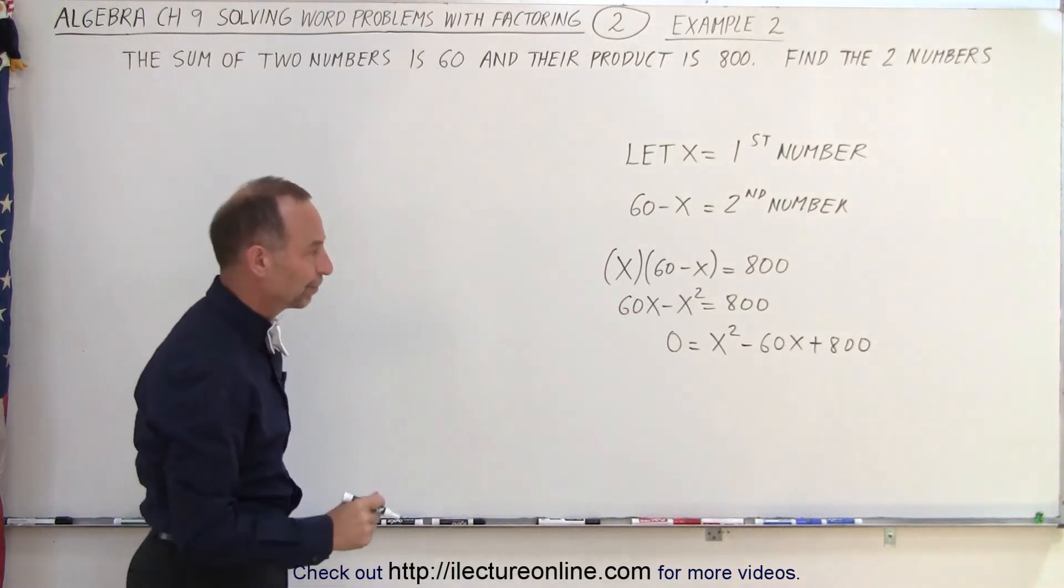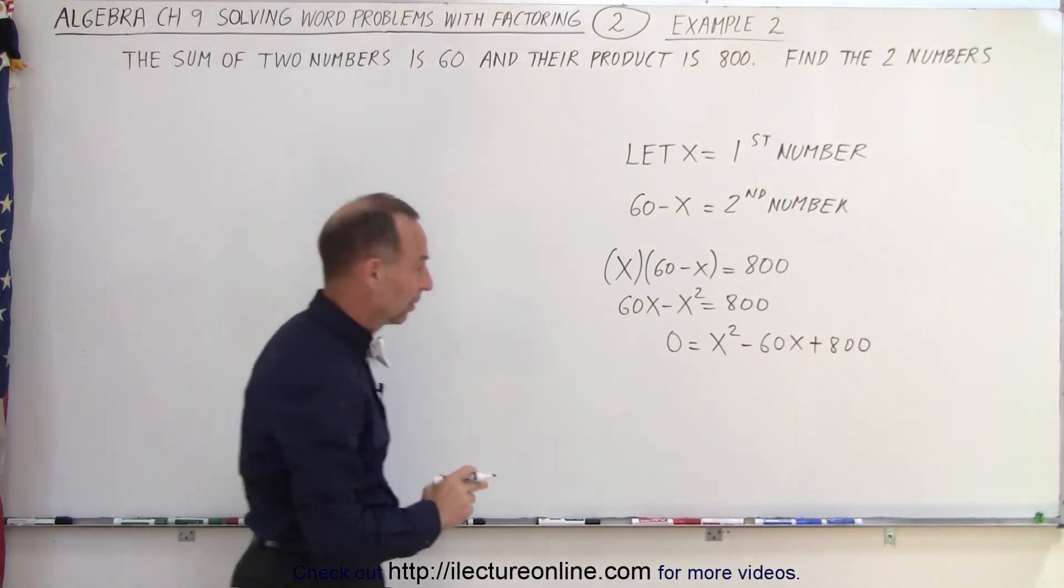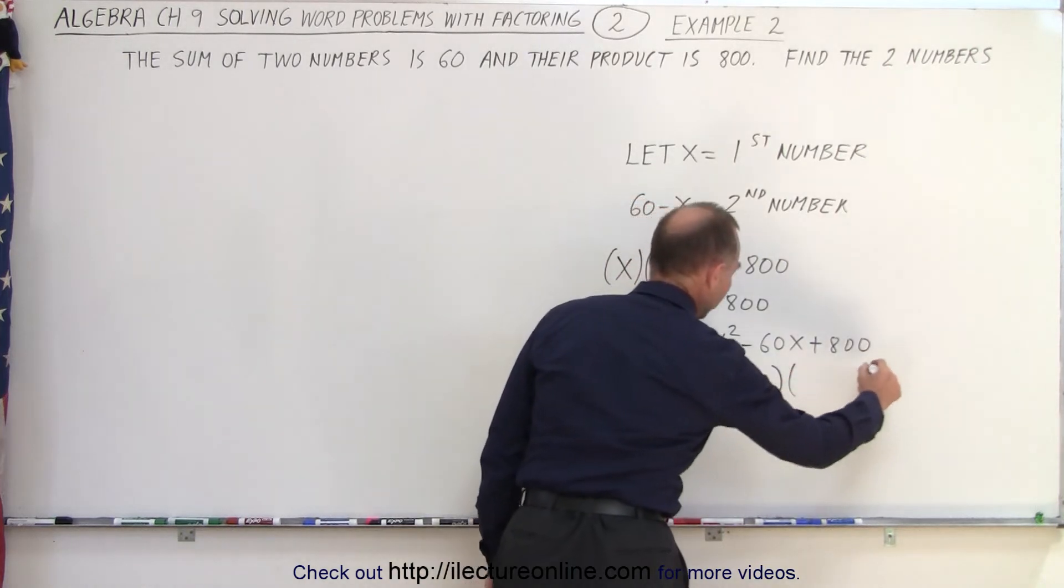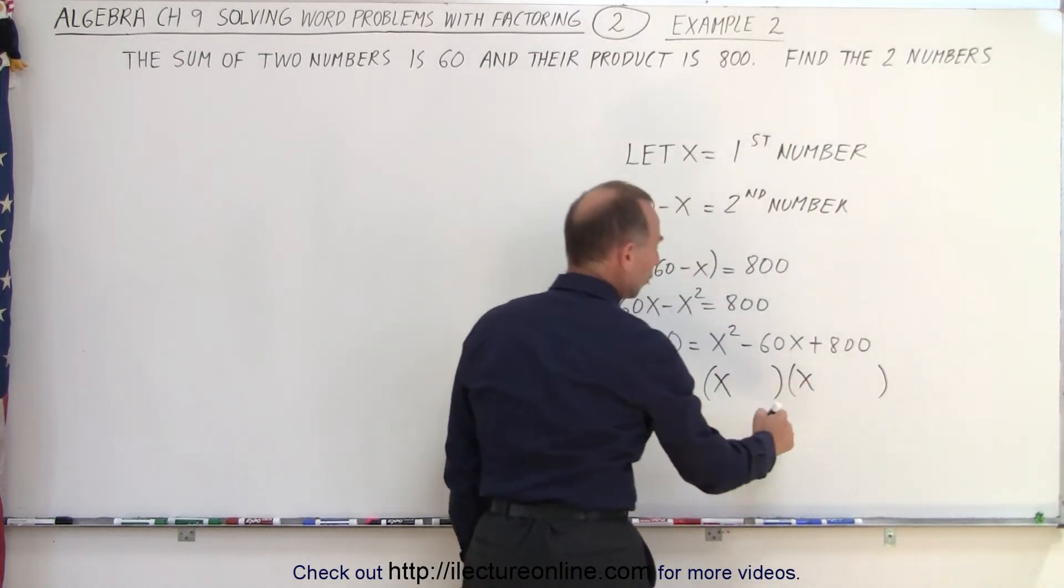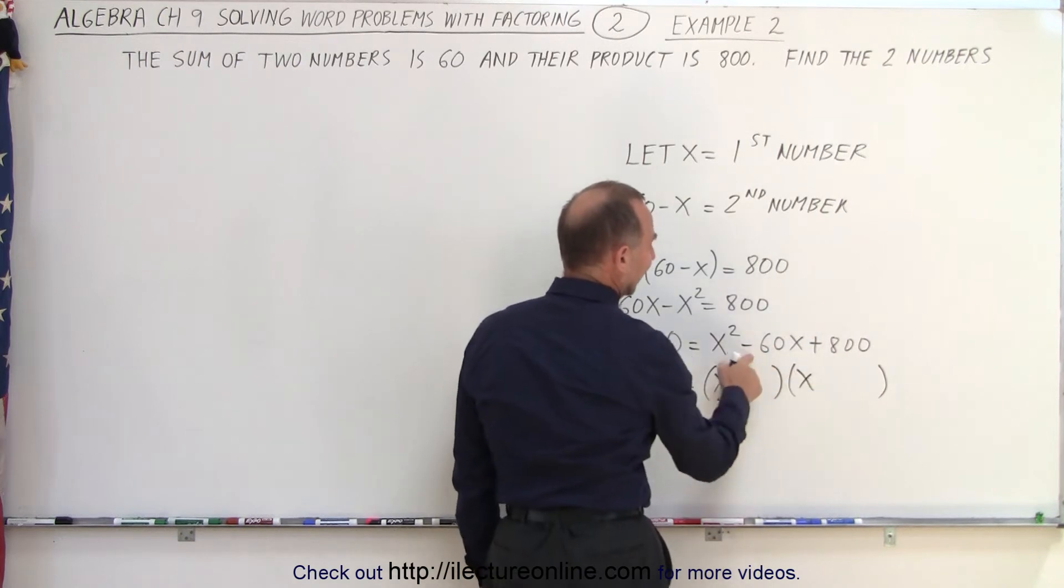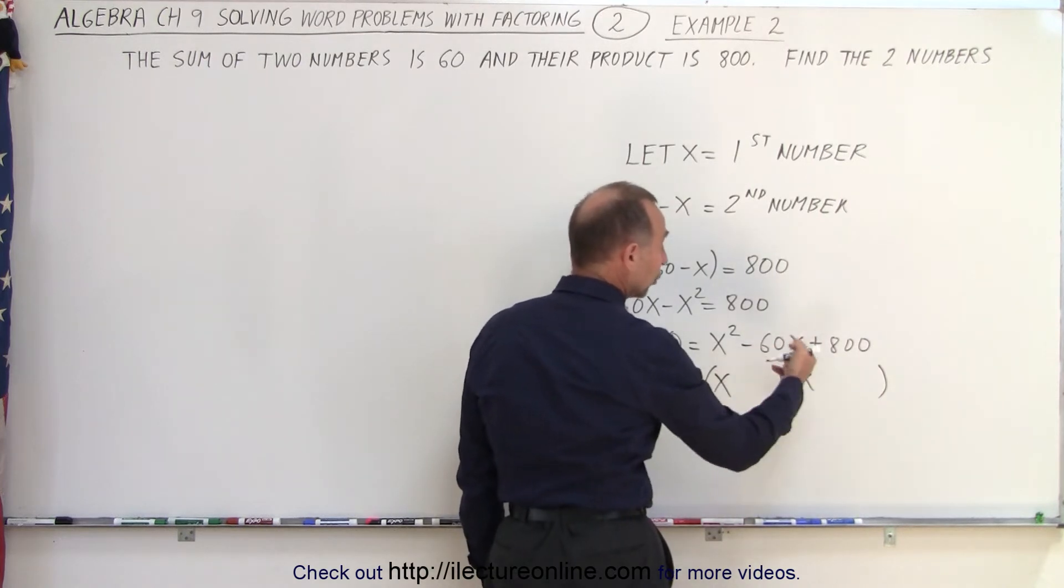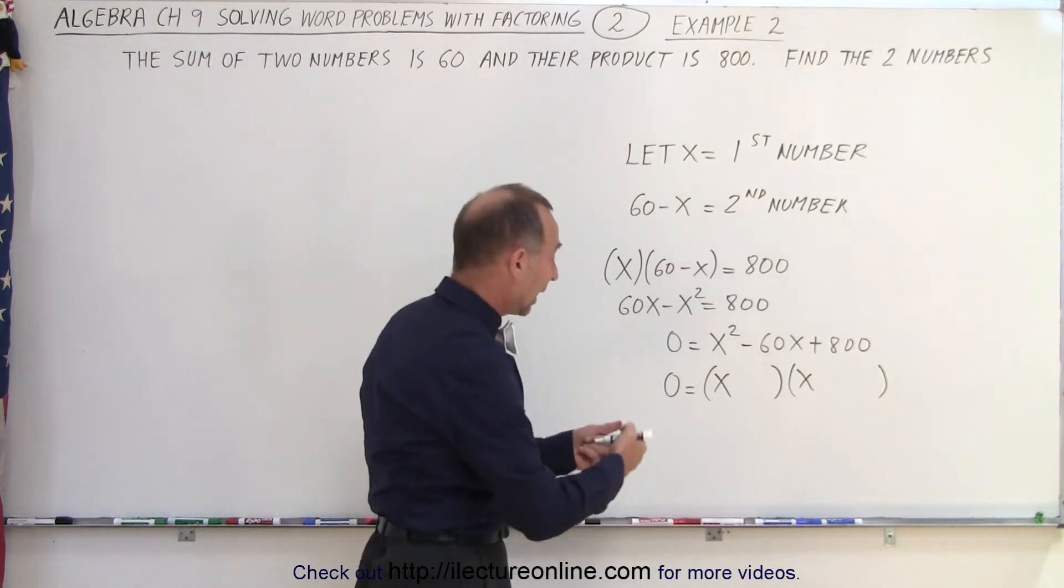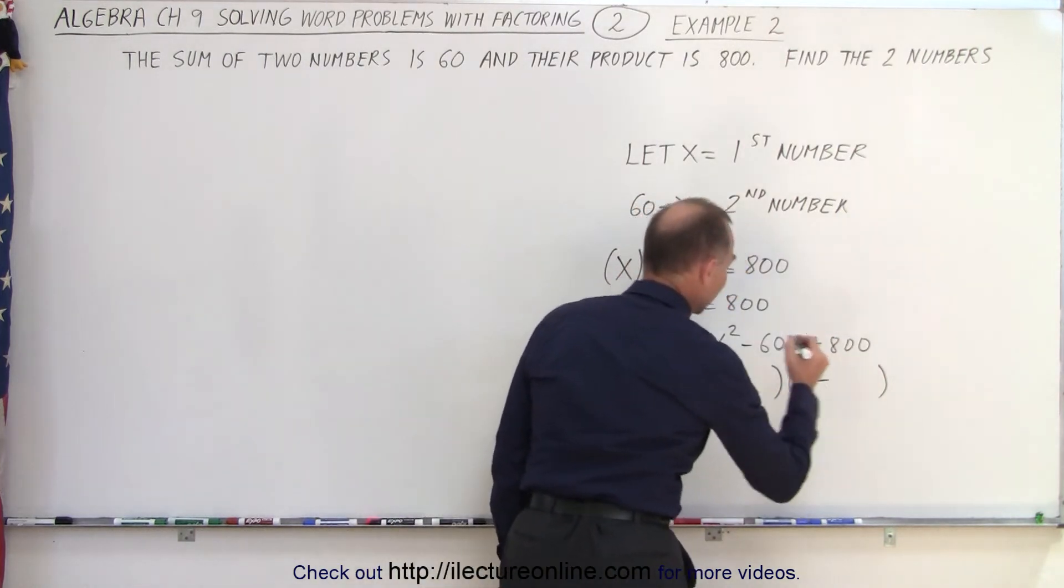And now we have to solve that using factoring. So here we go, 0 is equal to the product of two binomials, x and x. Notice that this is positive and this is negative, which means that both numbers must be negative, because when I multiply I get a positive number, and when I add them I get a negative number.